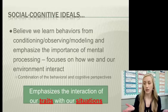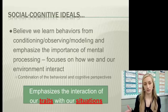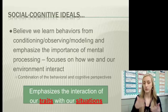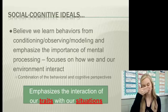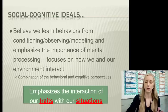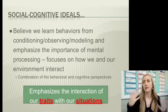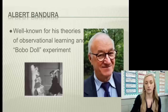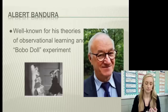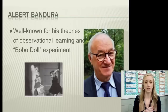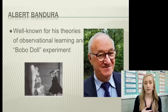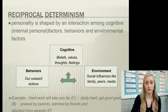Trait theory says that we behave the same given our traits no matter the situation. Social cognitive is saying no — you have to at least recognize what the situation is. The big name here is Albert Bandura, well known for his theories of observational learning with the Bobo Doll experiment.